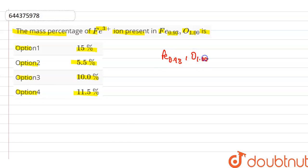Now we know that Fe0.93O1.00 is our neutral compound and we know that here iron is present in Fe+3 as well as Fe+2. If we let x is the number of atoms of Fe+3, then Fe+2 is 0.93 minus x.